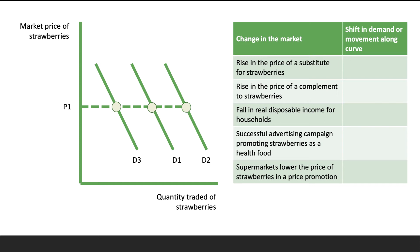With a rise in the price of a substitute, there's going to be an outward shift because strawberries are now lower priced relative to their substitutes - we'd expect some consumers to shift their demand towards strawberries. For example, if the price of cherries goes up, people might buy fewer cherries and buy strawberries instead. A rise in the price of a complement to strawberries - such as ice cream becoming more expensive - would cause an inward shift to D3, as people buy less ice cream and therefore less strawberries. A fall in real disposable income for households - assuming strawberries are a normal good - would also cause an inward shift from D1 to D3.